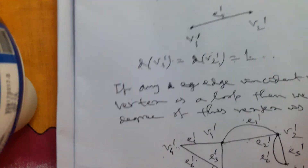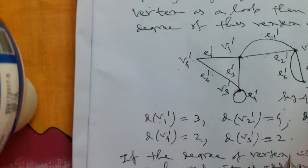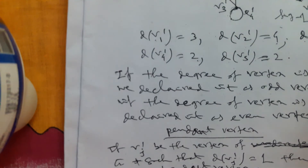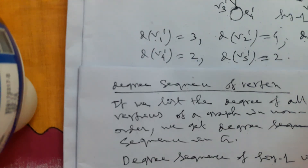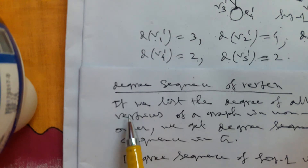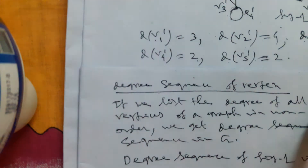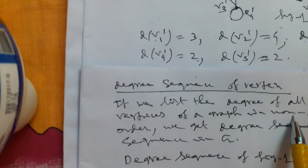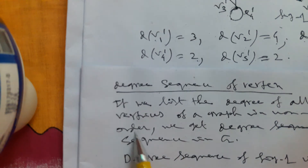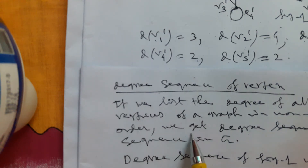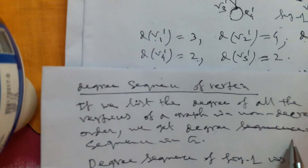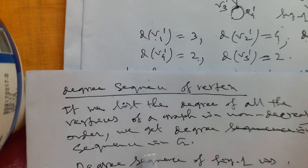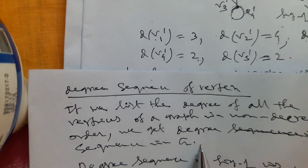Next we consider degree sequence. If we list the degree of all the vertices of a graph in non-decreasing order, we get the degree sequence of G.